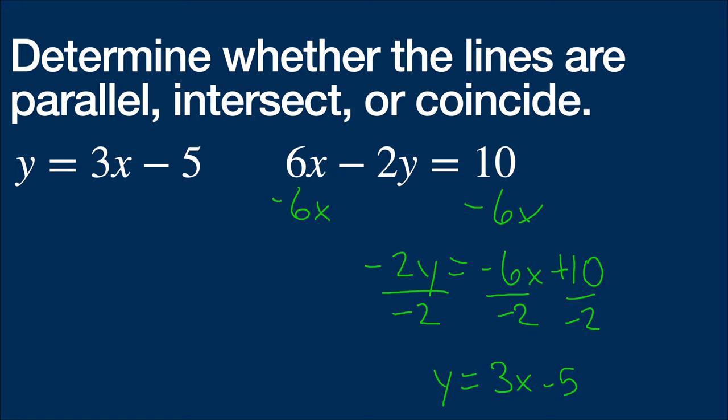This becomes y equals -6 over -2 is positive 3x, and then minus 5. Wait a second. Y equals 3x minus 5, and this is going to be underneath my writing. They coincide. They're the same line.